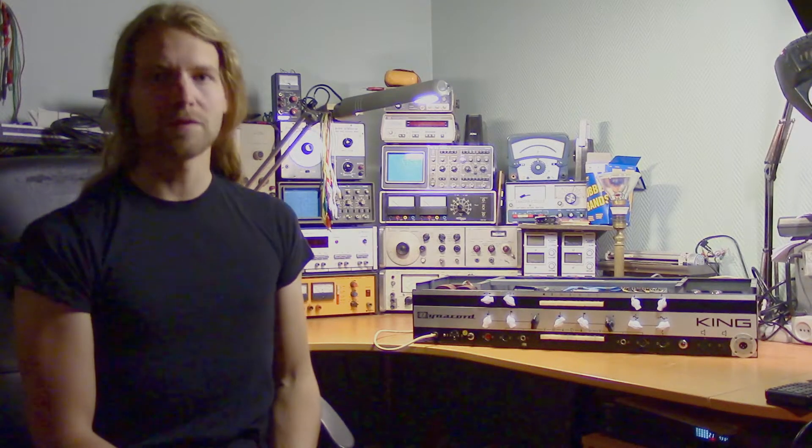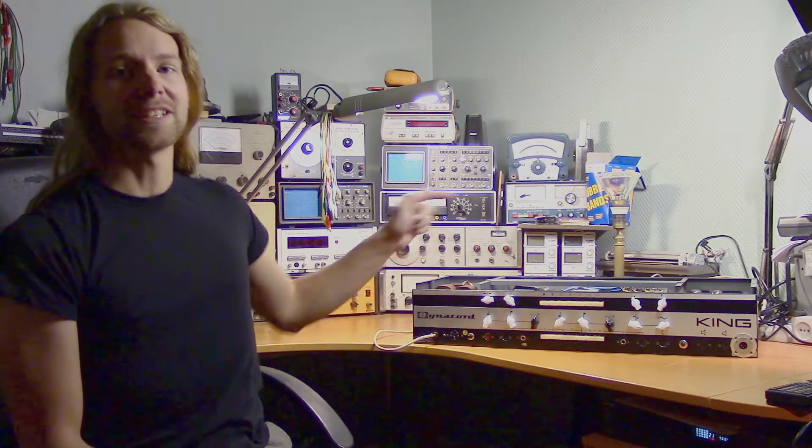This is the Danachord King, it's an all-vacuum tube guitar amplifier from the mid-60s. We're going to take a look at its features, then we're going to look inside it, and then we're going to change the magnetic tape in the echo.